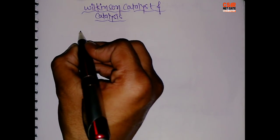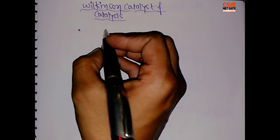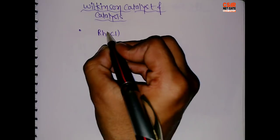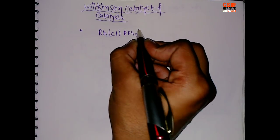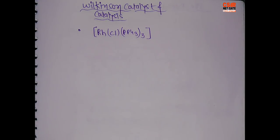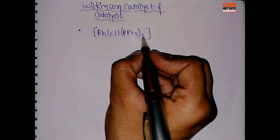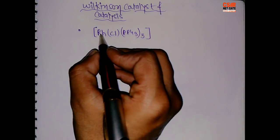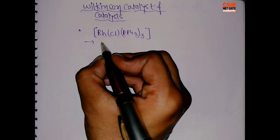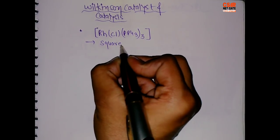The first point is, what is the formula of this Wilkinson Catalyst: RhCl(PPh3)3. Now the question arises, what is the structure and how many electrons does it have? Since there are 3 ligands and one Cl, 4 ligands and rhodium is an element of 5D series, it will make a square planar complex.